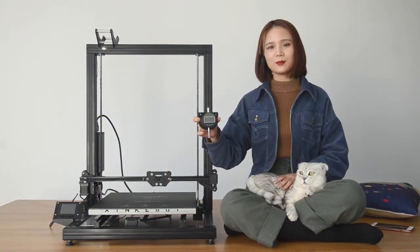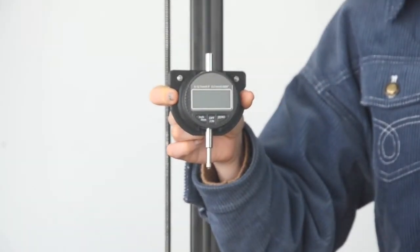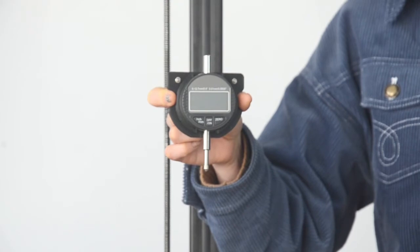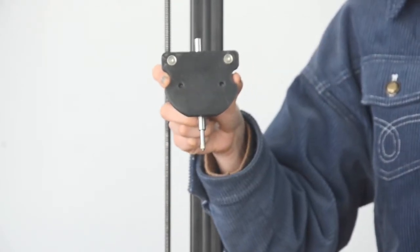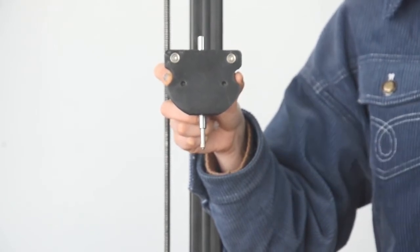To ensure the accuracy, usually we will use a dial indicator to make sure the bed is level. With the special part we made, now it can be attached to the metal board.